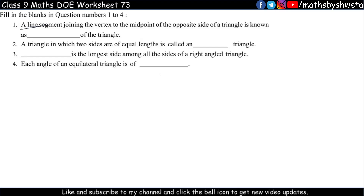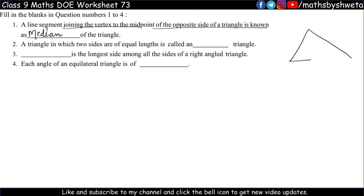Question number 1: A line segment joining the vertex to the midpoint of the opposite side of a triangle is known as the dash of a triangle. I will write the answer first — it is median. The concept of the median: joining the vertex to the midpoint of the opposite side. I am going to make a triangle. There is a vertex and this is the opposite side. I am going to make a midpoint on the opposite side, and the line segment joining vertex to midpoint is the median.